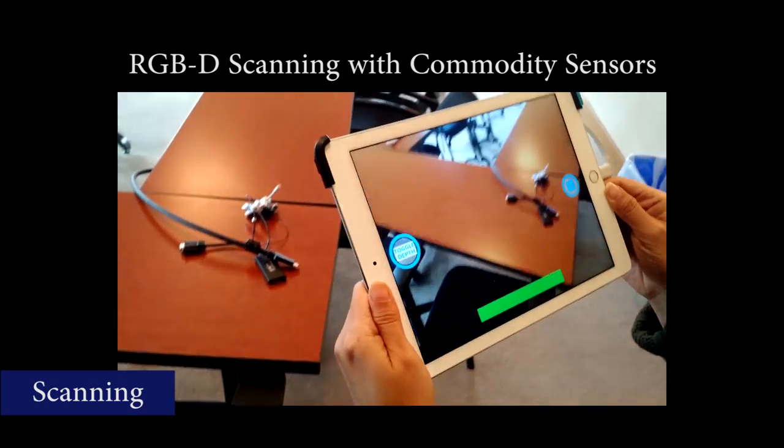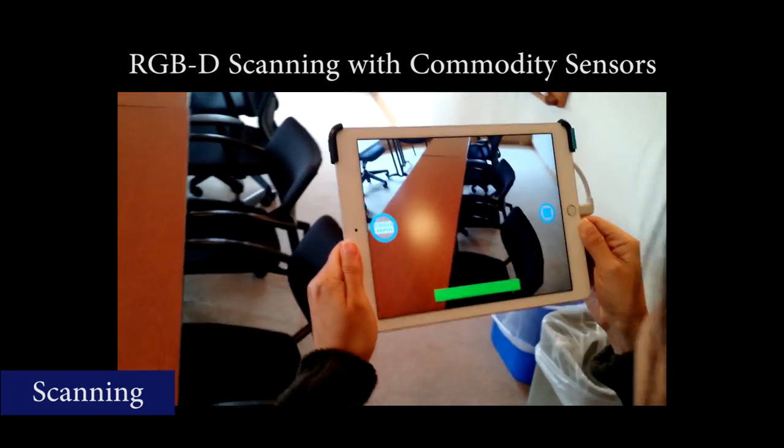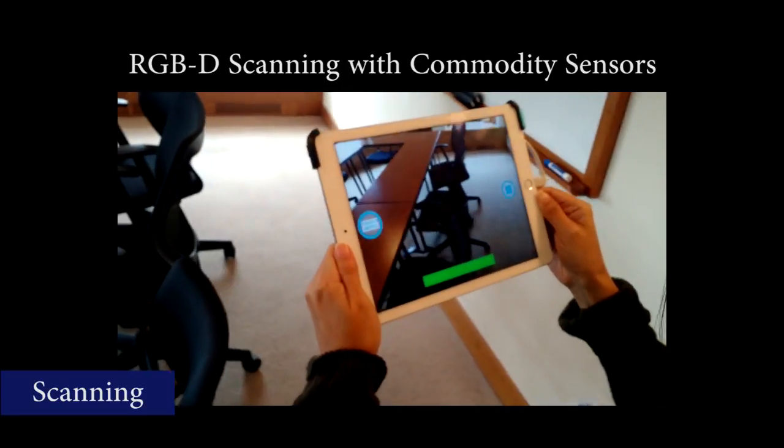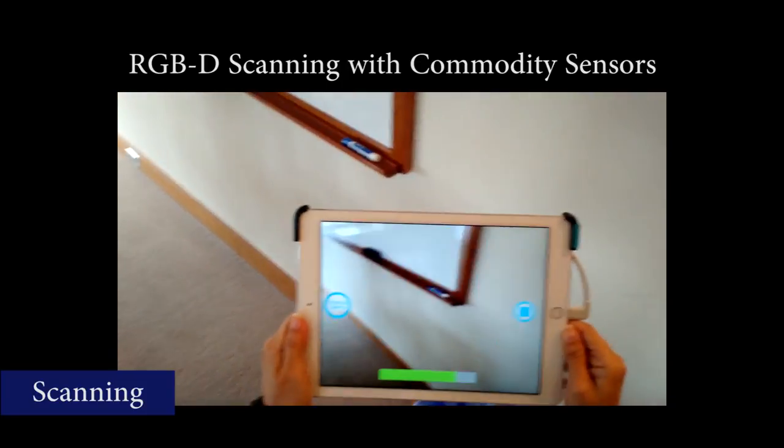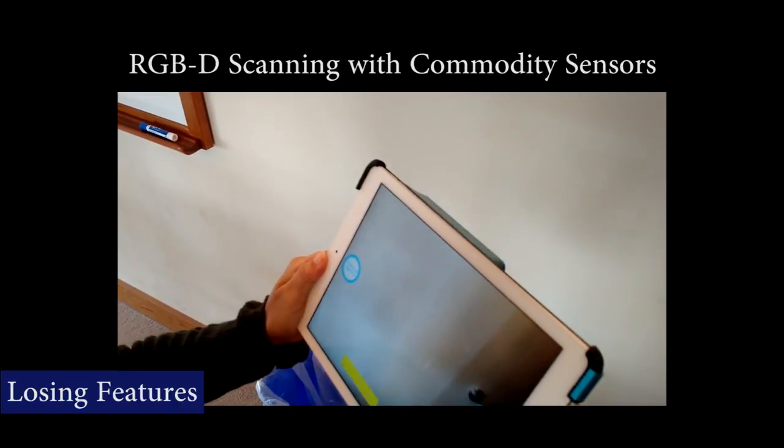As the user starts scanning, a feature bar on the bottom of the screen indicates the likelihood of maintaining tracking through the video sequence. Here we see the loss of features while scanning a white wall.